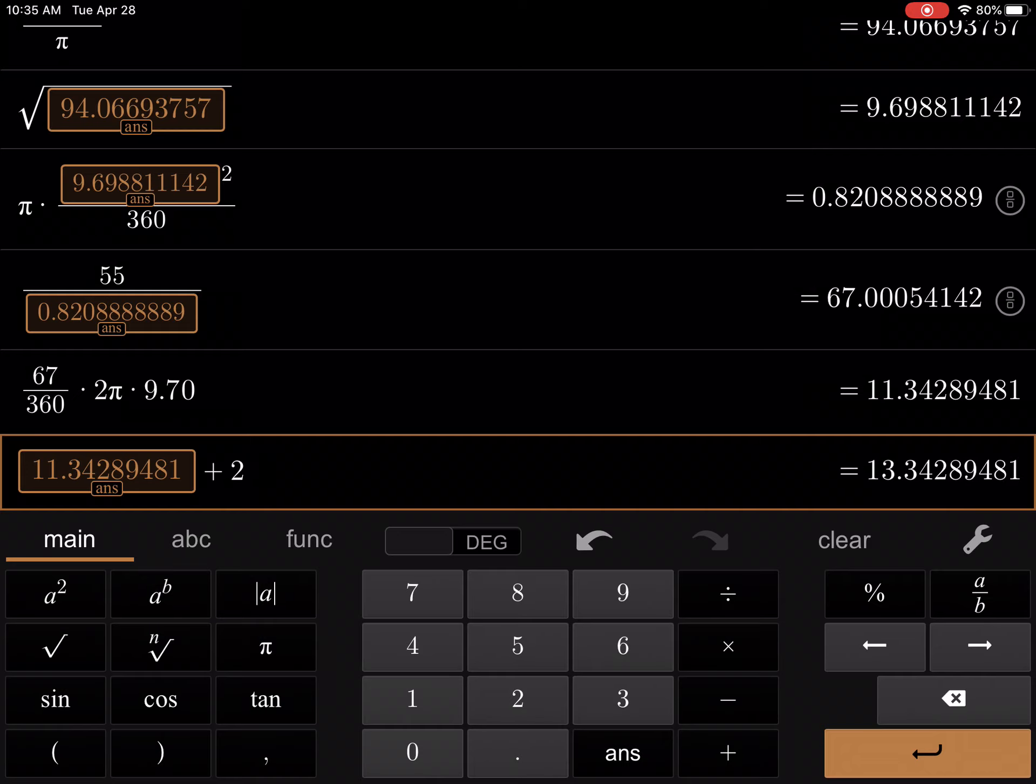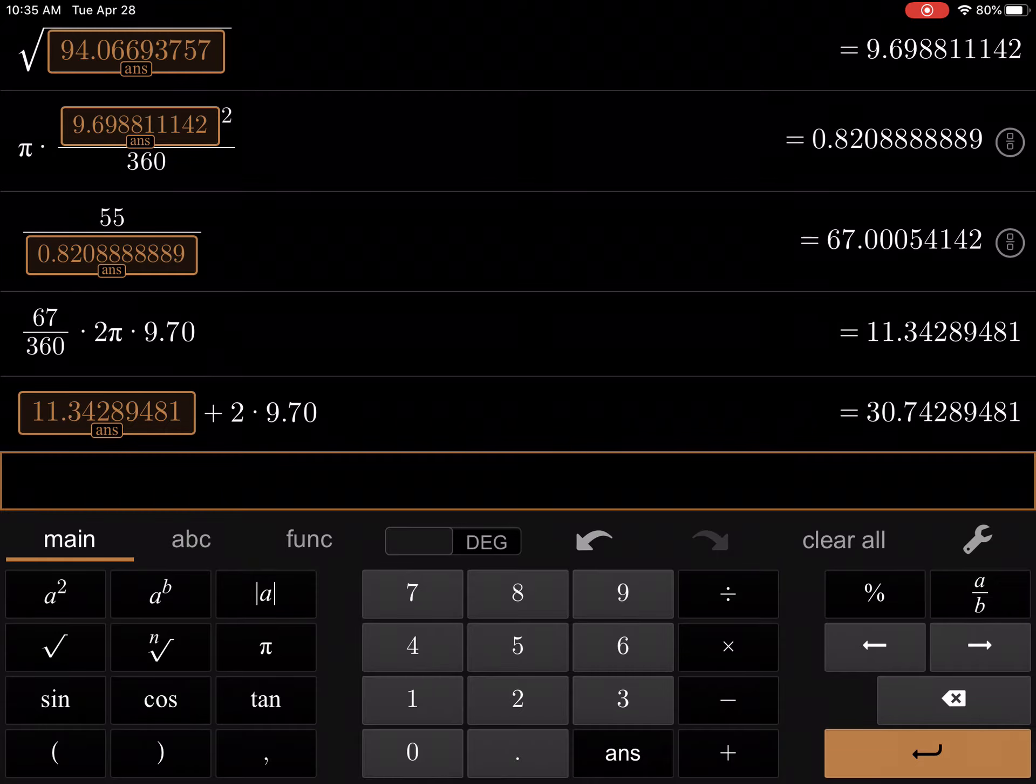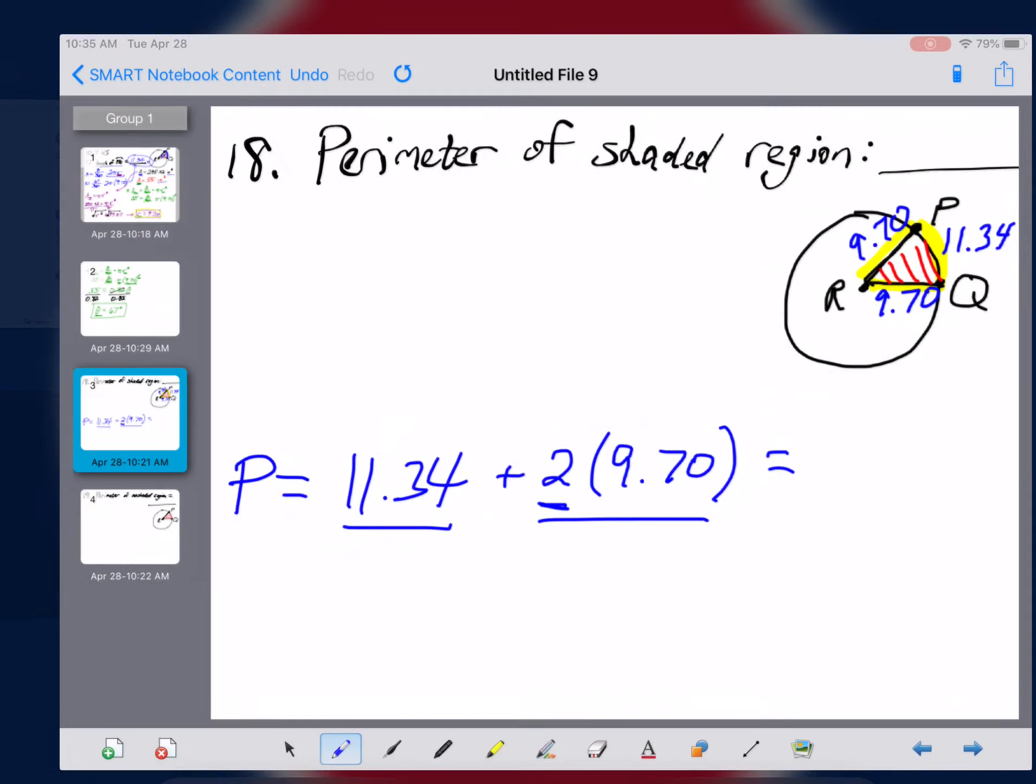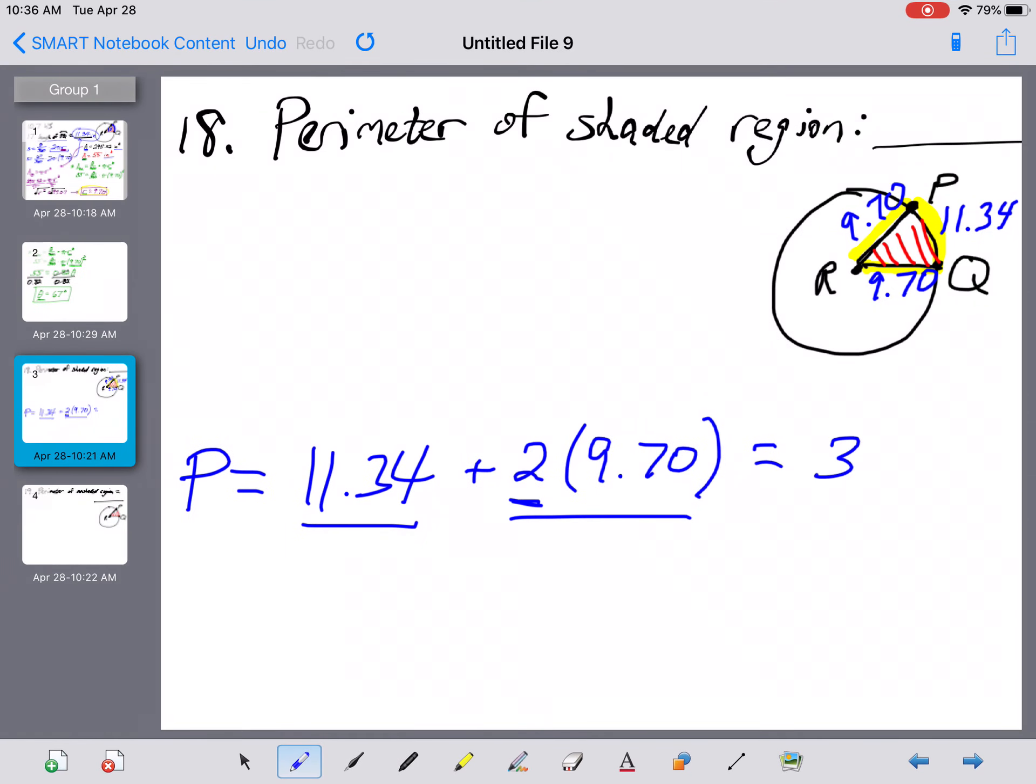...two times the 9.70 that we were coming up with for our radius, and that gets me an answer here of 30.74 for the perimeter of the shaded region.